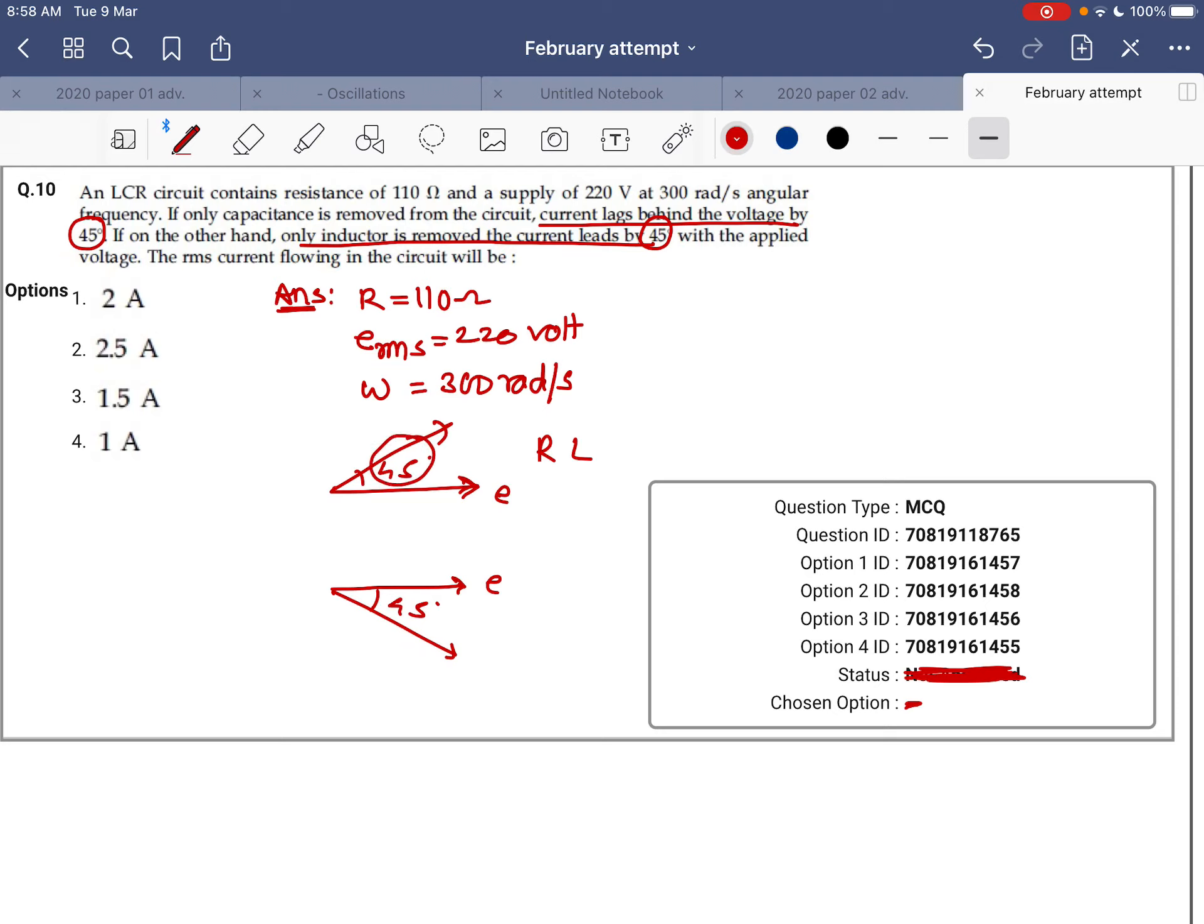The leading and lagging of current by the same amount means this particular frequency is the resonance frequency. At resonance frequency, an LCR circuit behaves like a pure resistive circuit, and I_RMS would be equal to E_RMS upon Z.